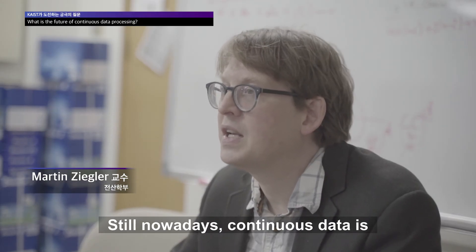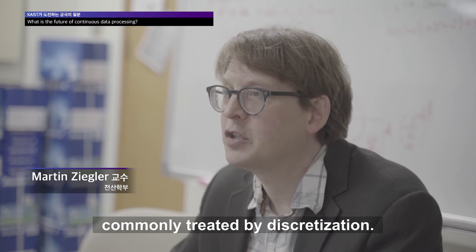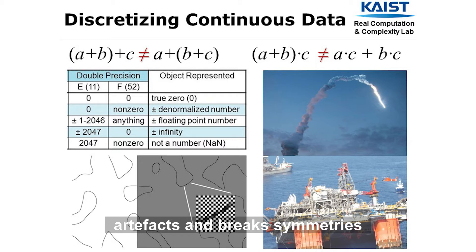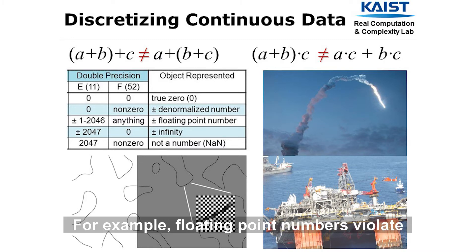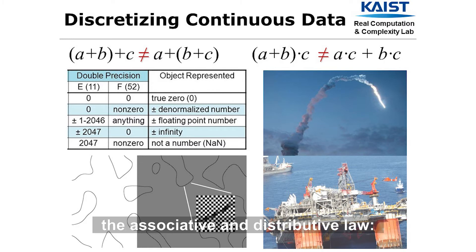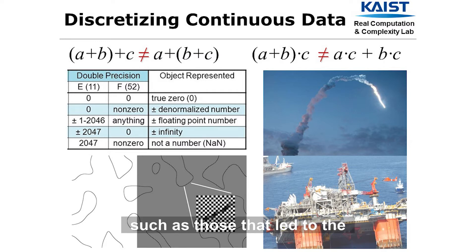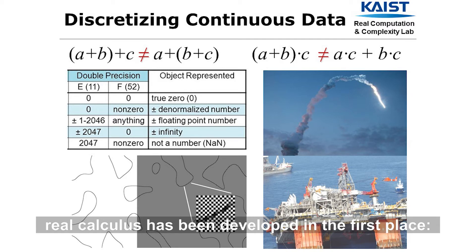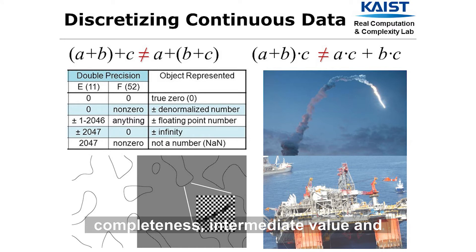Still nowadays, continuous data is commonly treated by discretization. But discretizing a continuous problem adds artifacts and breaks symmetries as well as other beneficial properties of the original formulation. For example, floating-point numbers violate the associative and distributive law, leading to many bugs buried in most numerical codes — such as those that led to the collapse of the computer-designed Sleipner A oil platform, or the failure of the Ariane 5 maiden flight 501. Discretization voids all the reasons that real calculus has been developed in the first place: completeness, intermediate value, and fixed point theorems.